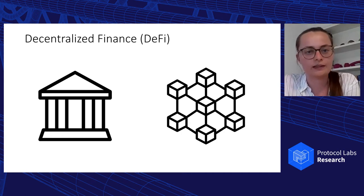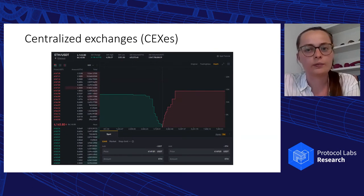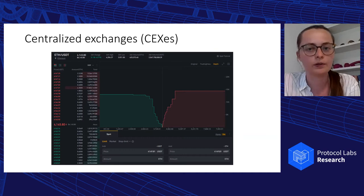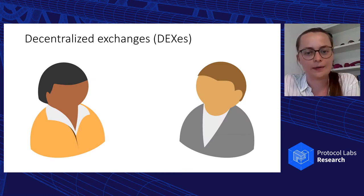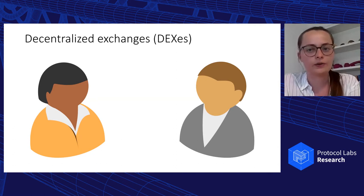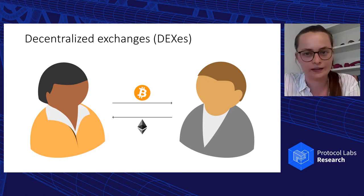Decentralized finance makes financial products available to anyone on the blockchain, and anyone can use them. If you want to participate in decentralized finance, you don't have to go through a middleman like banks or brokerages, but can directly interact with the protocols. We focus on one service in particular: decentralized exchanges. In traditional finance, buying cryptocurrencies generally goes through the limit order book mechanism, which matches buyers and sellers via a financial intermediary such as Binance. Recently, decentralized exchanges have emerged — smart contracts on the blockchain that allow users to trade cryptocurrencies without any financial intermediaries. So Alice and Bob can exchange Bitcoin for Ether directly with a decentralized exchange.